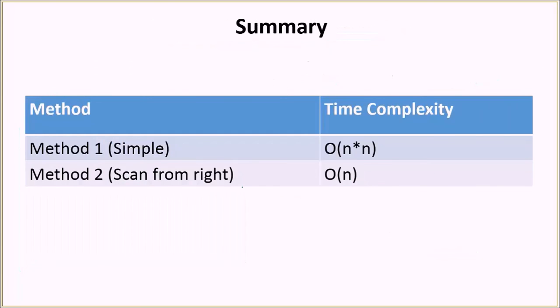So in summary, we discussed two methods. The first one was a simple method where we were running two loops and its time complexity was thus order of n square. But if we just scan from the right side, the time complexity reduces to order of n which is really good.